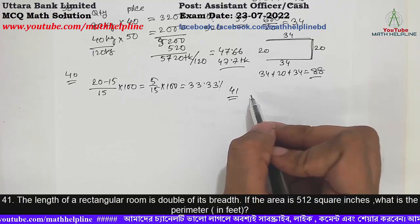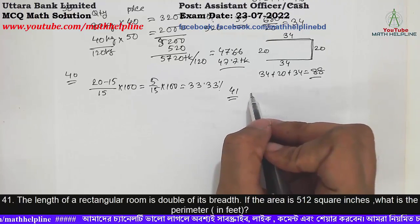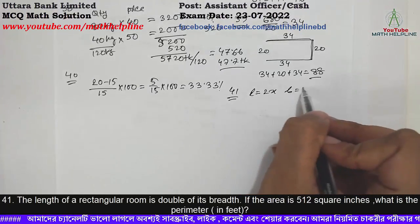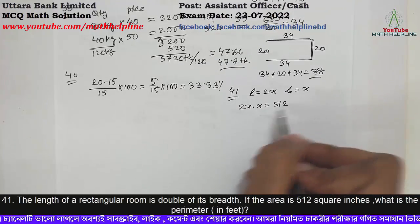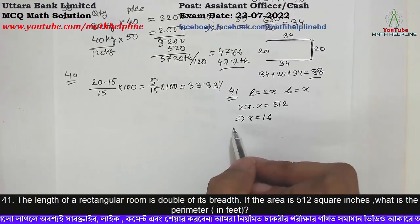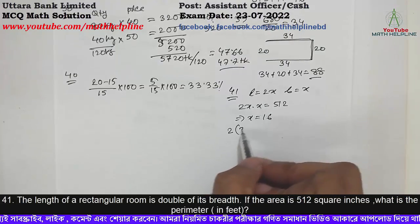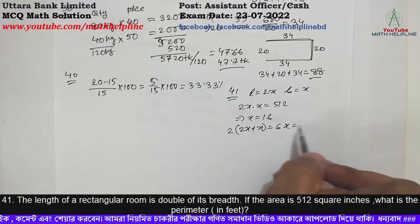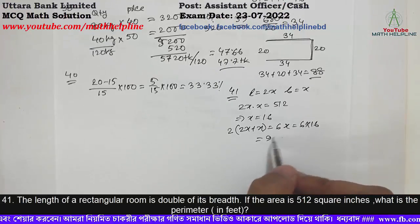The perimeter corresponds to area 512. Let length equal to 2x and breadth equal to x. Area: 2x into x equals 512. Solving, x equals 16. Perimeter: 2 into (2x plus x) equals 6x equals 6 into 16 equals 96.